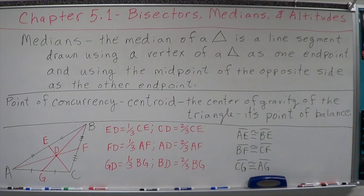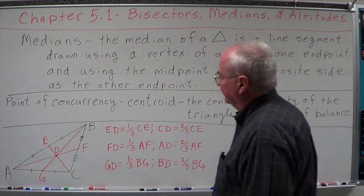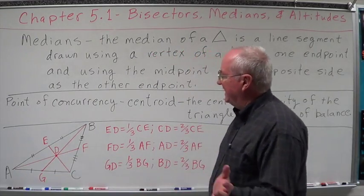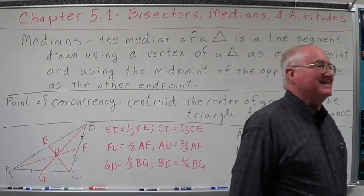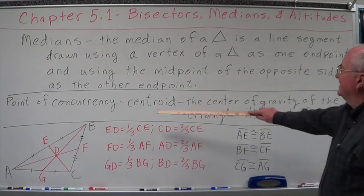What are the endpoints? Vertex, midpoint of the opposite side. Got a drawing here. Again, triangle ABC. We're going to get stuck with this. And its point of concurrence is D. That is known as a centroid.